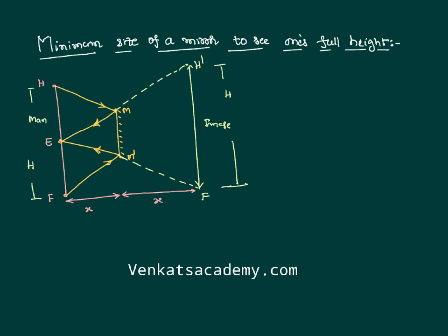My diagram is not appearing exactly to scale since I am drawing by hand, but practically both distances are going to be the same. Now you can see that there are two similar triangles in our diagram. Those two triangles are triangle E, M, M-dash and another triangle E, H-dash, F-dash. These two triangles are similar because they share a common angle. If the triangles are similar, the ratios of their sides are the same.